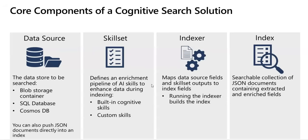In a basic search solution, you might simply index the data extracted from the data source. The information that can be extracted depends on the data source. For example, when indexing data in a database, the fields in the database tables might be extracted. Or, when indexing a set of documents, file metadata such as file name, modified date, size, and author might be extracted along with the text content of the document.